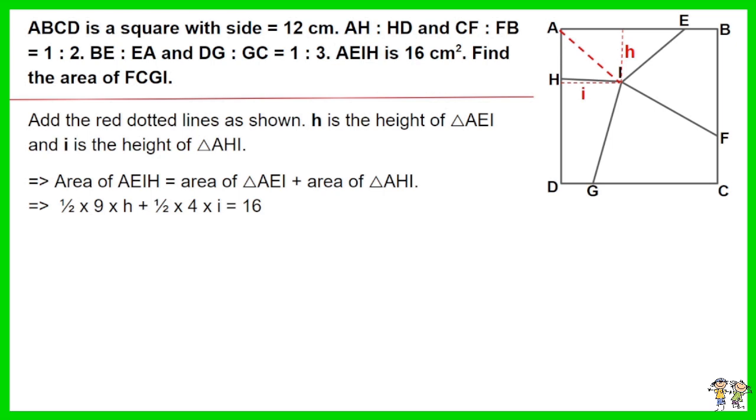Area of AEIH equals area of triangle AEI plus area of triangle AHI. Area of triangle AEI equals half times 9 times H. Area of triangle AHI equals half times 4 times I.